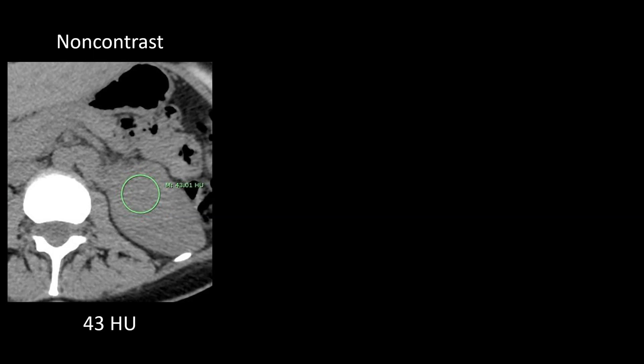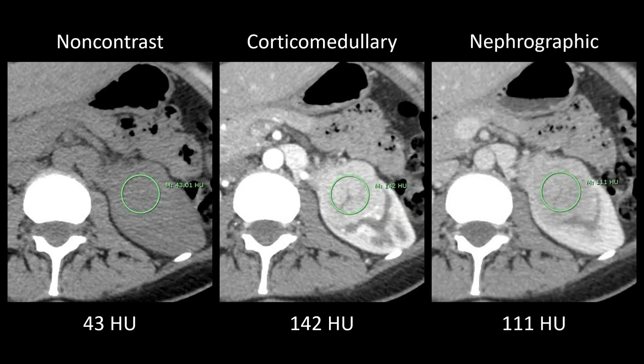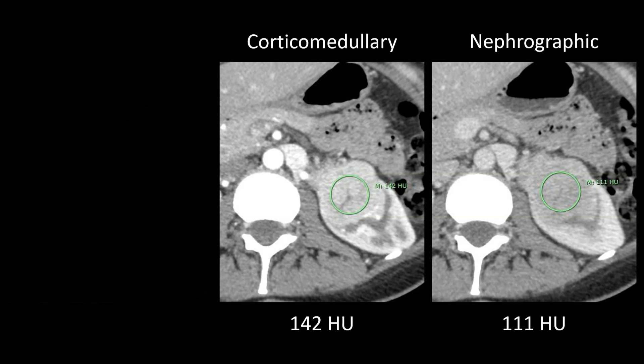Looking at the non-contrast series, the density of the mass is 43 Hounsfield units. Fluid or cysts tend to have a density of 20 or less, so anything above 20 raises concern for either a hyperattenuating cyst or a renal tumor. After intravenous contrast in the corticomedullary phase, the mass increases to 142 Hounsfield units — an increase of nearly 100 — which indicates definite enhancement. True enhancement requires a density difference of 20 or more. On the nephrographic phase, density drops to 111 Hounsfield units, still well above baseline — confirming definite enhancement.